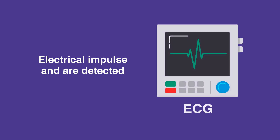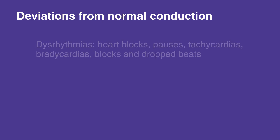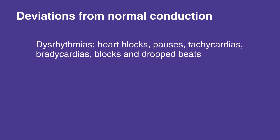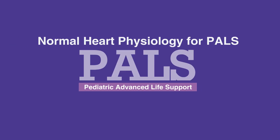Abnormalities in the conduction system can cause delays in the transmission of the electrical impulse, and are detected on the ECG. These deviations from normal conduction can result in dysrhythmias, such as heart blocks, pauses, tachycardias and bradycardias, and dropped beats. This concludes our lesson on normal heart physiology for PALS. Next, we will review a systematic approach. Thank you.